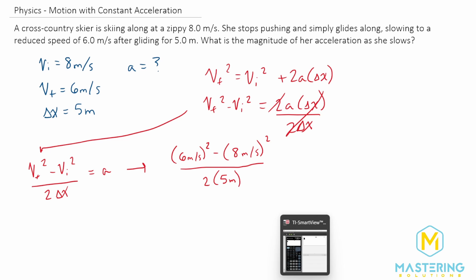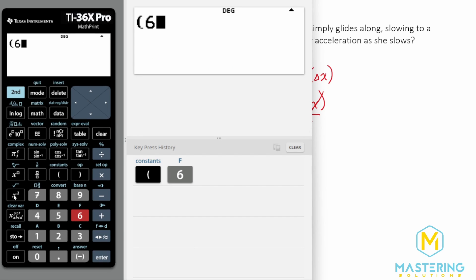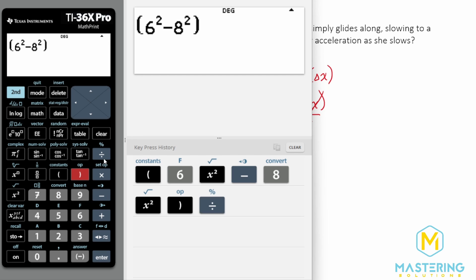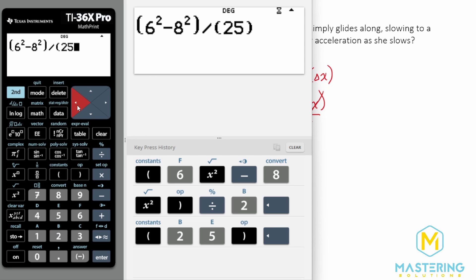So now let's go to our calculator. And we have 6 squared minus 8 squared, and that's all divided by 2, bracket this, 2 times 5.